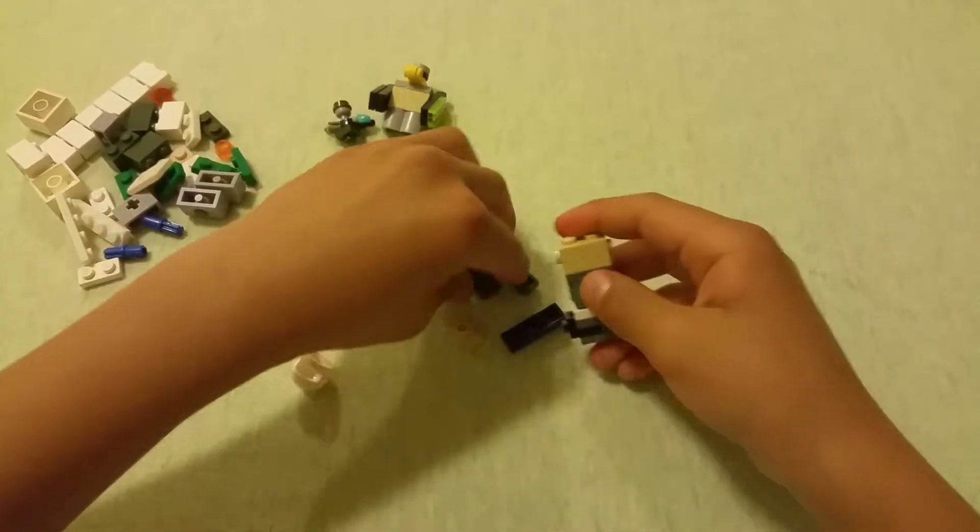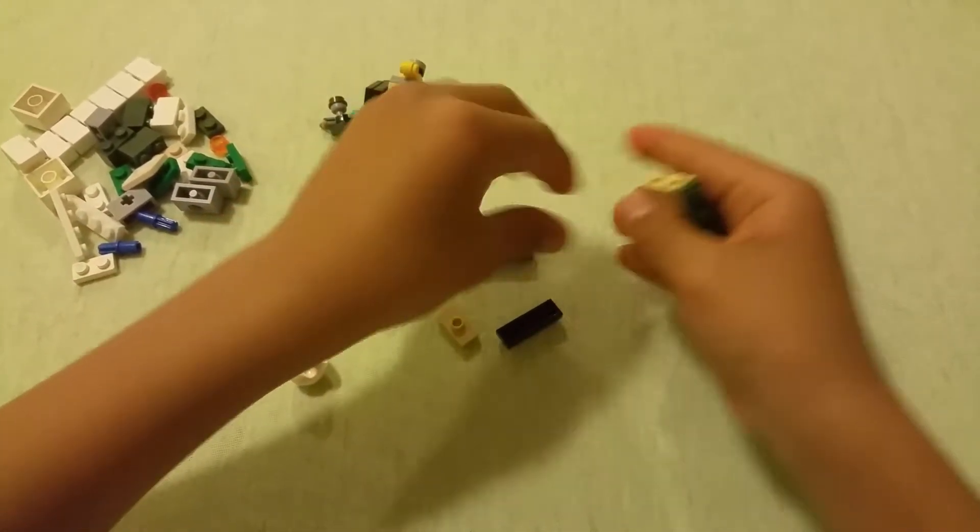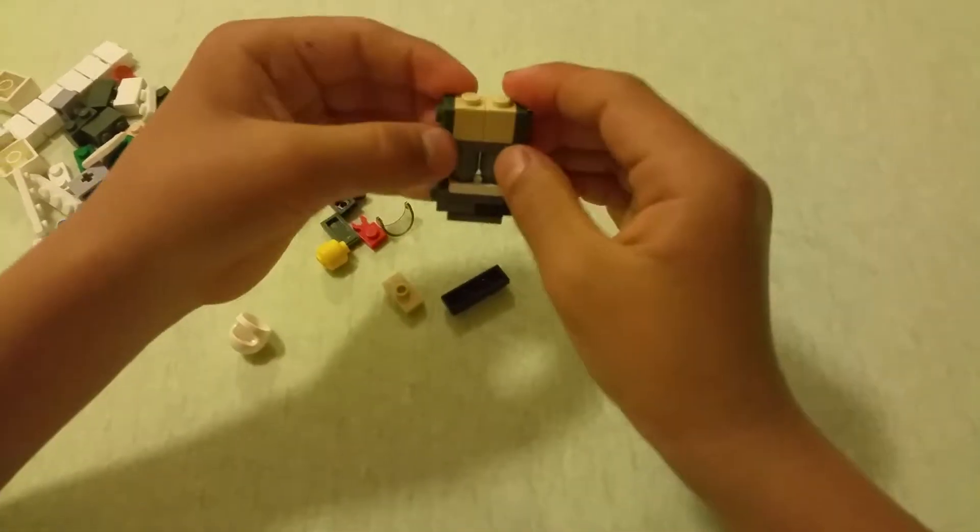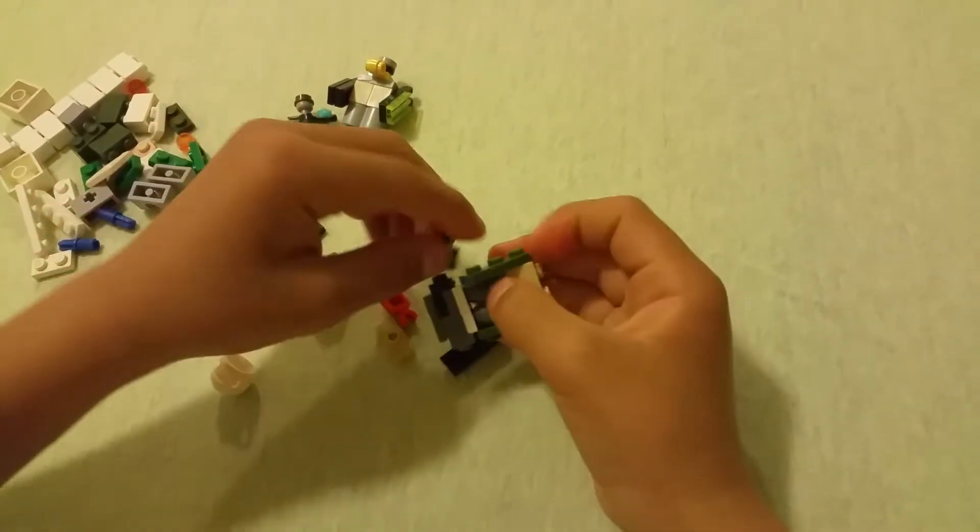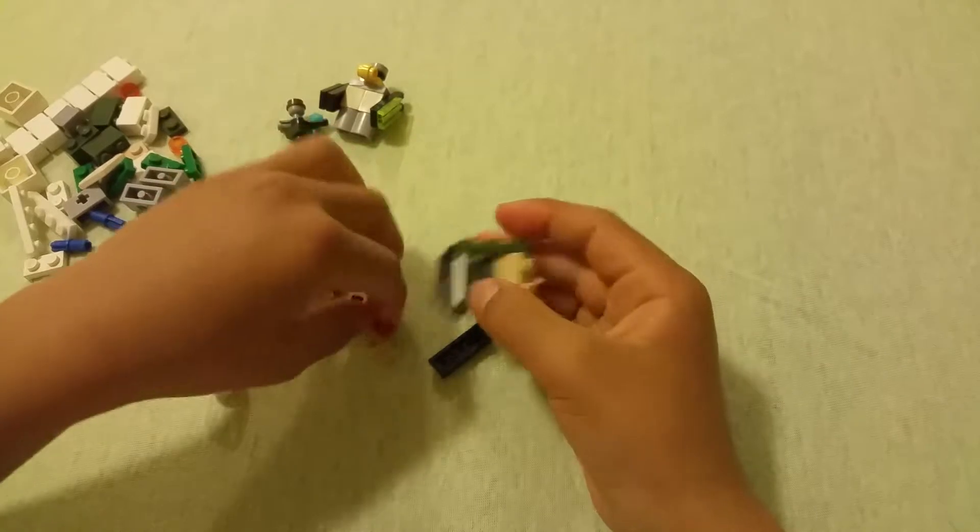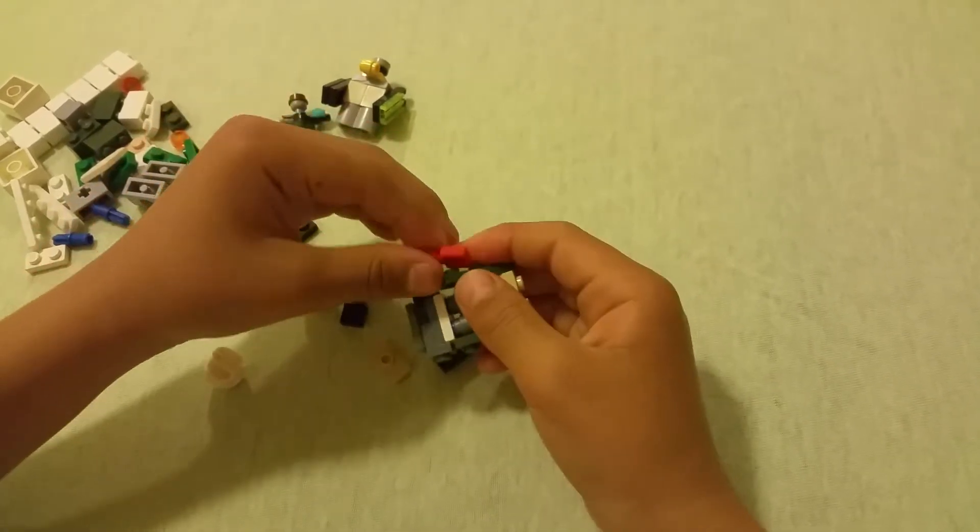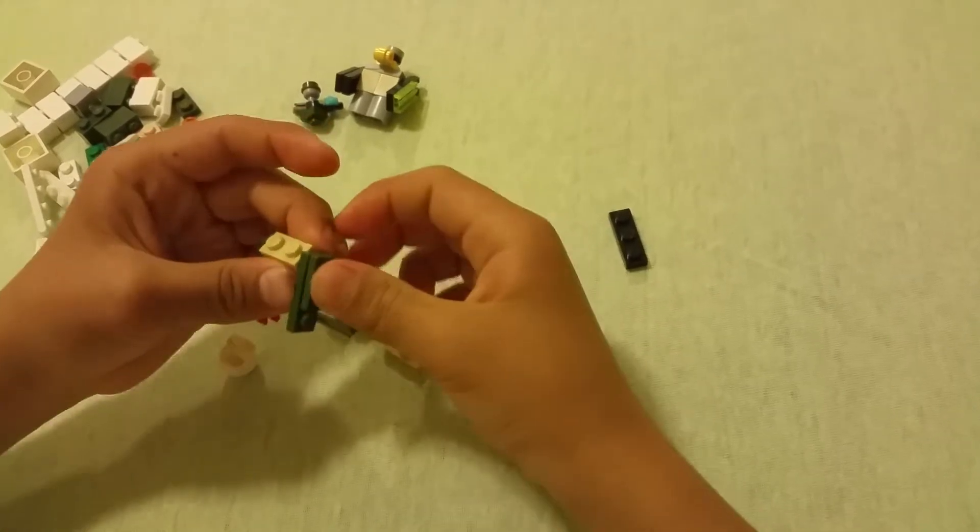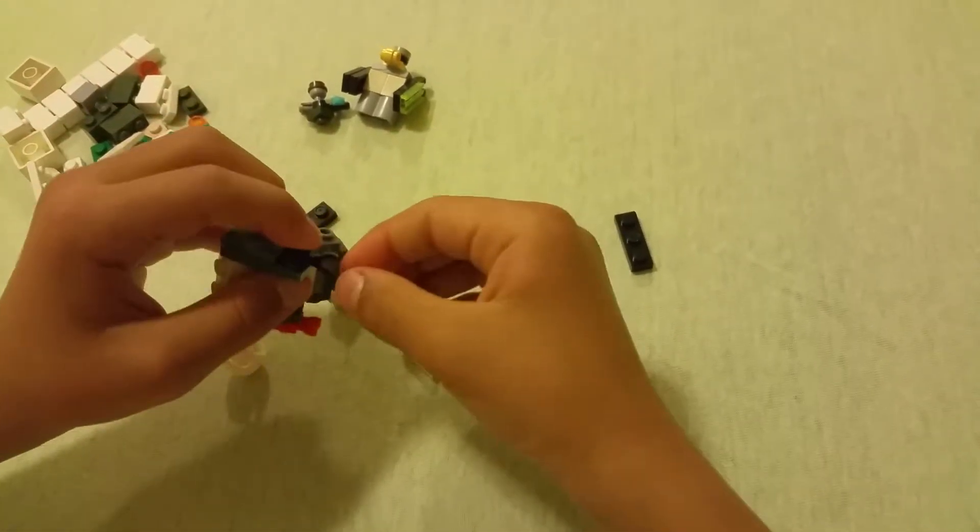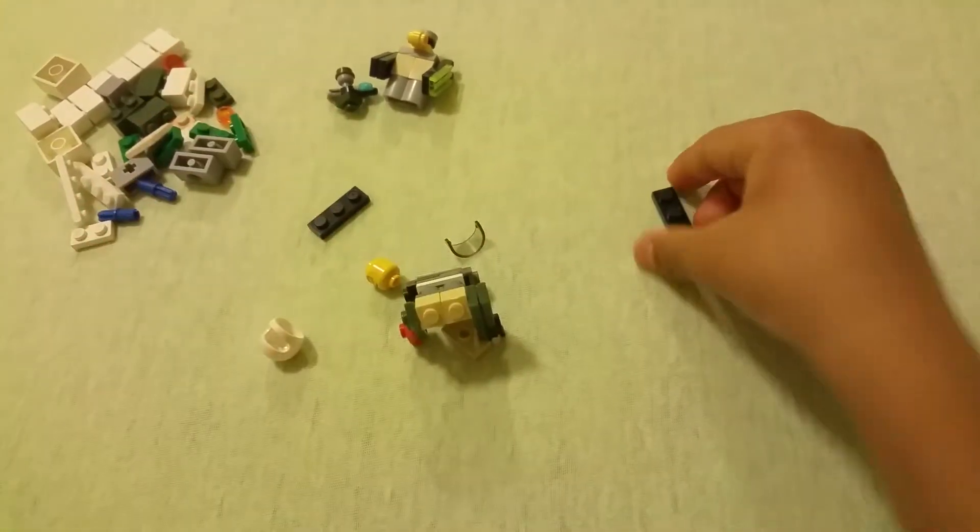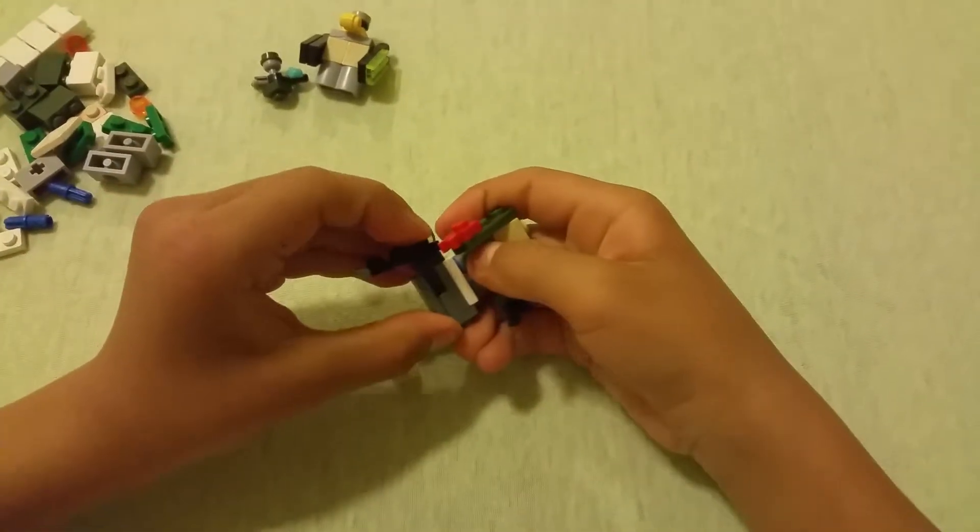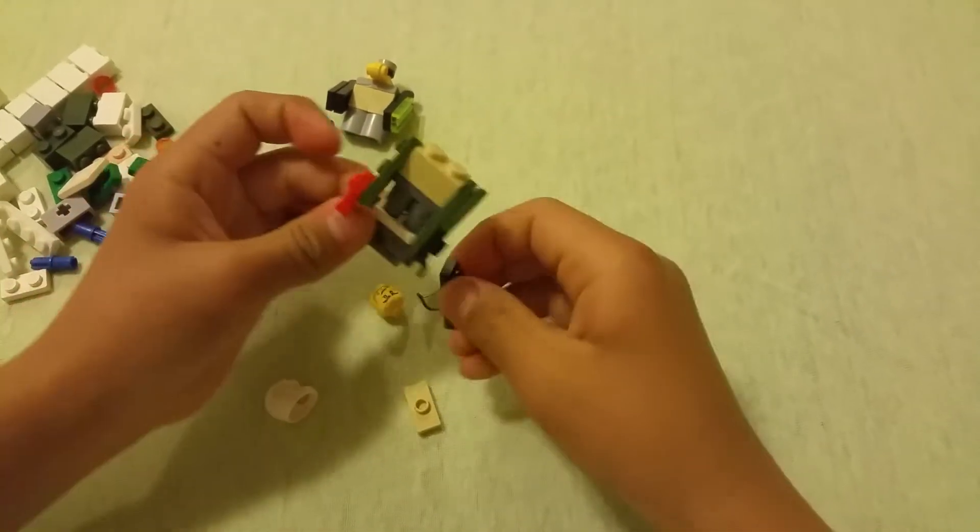So for the arms, we're going to do 1x3 plates. You can also do 1x3 tiles if you want to, but I'm not because on one of the sides, we're going to stick a 1x1 plate with clip going this way. And on the other side, it has some vines on it, so I'm using a tile. And then another of these plates with clips going this way, this time.